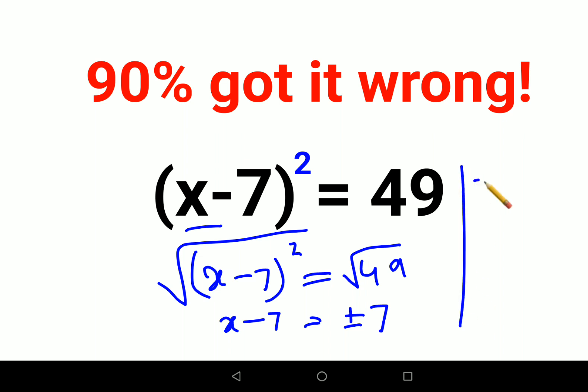So if x - 7 equals +7, the value of x would be 14. And if x - 7 equals -7, then the value of x would be 0.